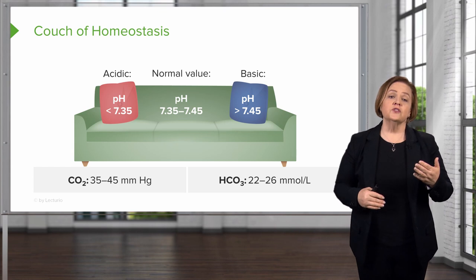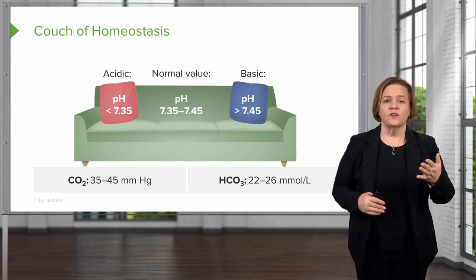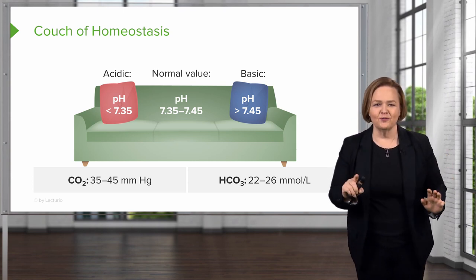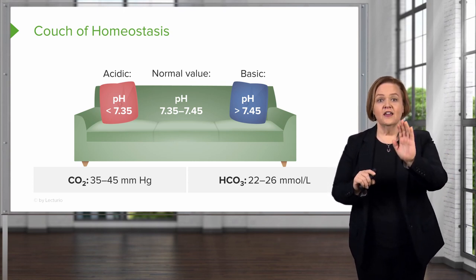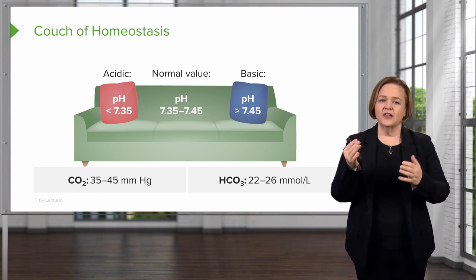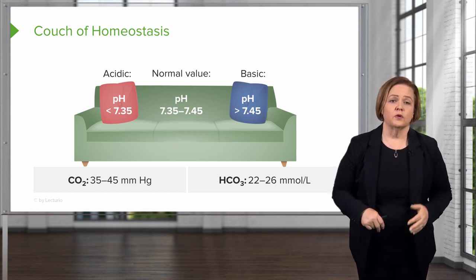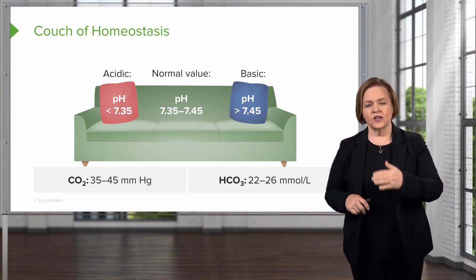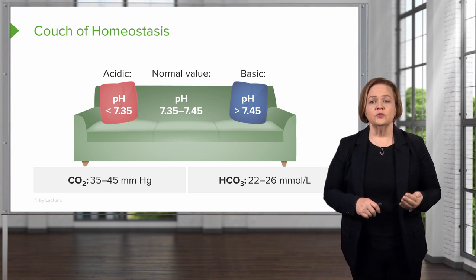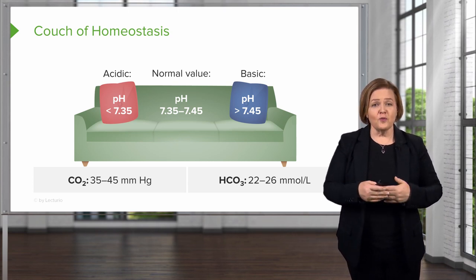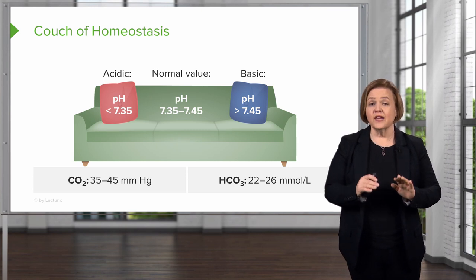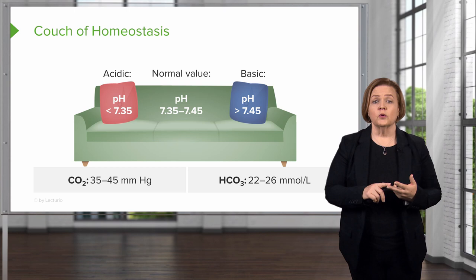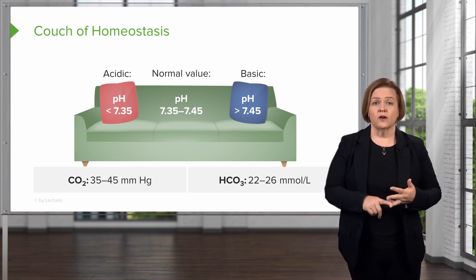Normal levels for CO2, carbon dioxide, are 35 to 45. pH of 7.35 to 7.45 — it's super easy to remember the normal CO2: 35 to 45. Now the normal bicarb is 22 to 26. Before we really get rolling, I want to make sure you've written down those three values: the normal pH, the normal carbon dioxide, and the normal bicarb.